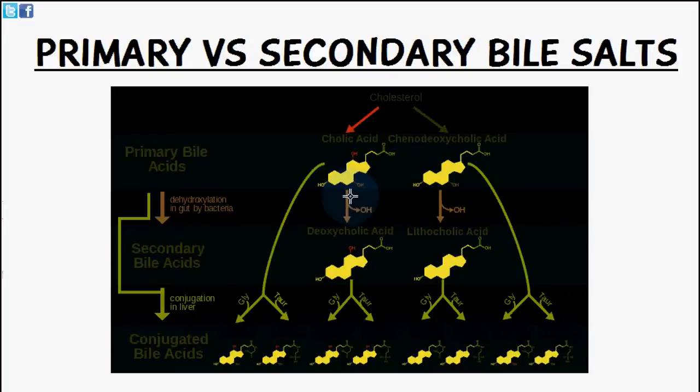So initially we start off with two primary bile acids. They are known as cholic acid and chenodeoxycholic acid and they are synthesized in the hepatocytes of the liver from cholesterol. Then what happens is they are conjugated with the amino acid either glycine or taurine before they're secreted into the bile, and then they form primary bile salts.